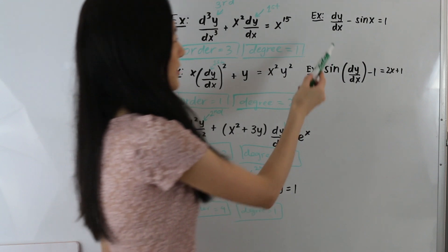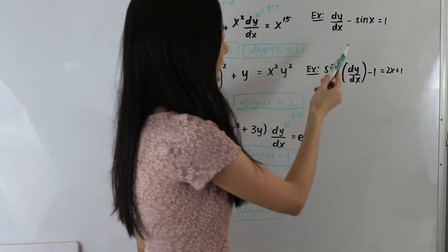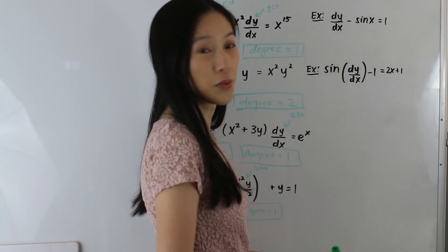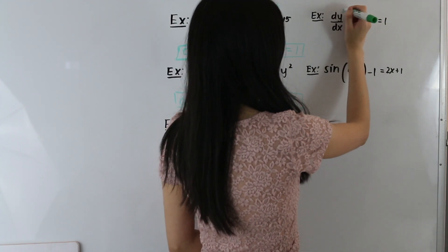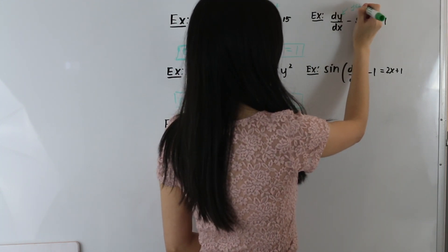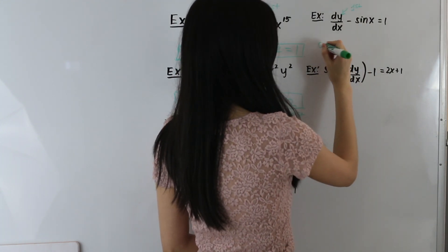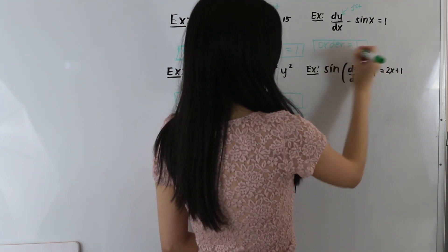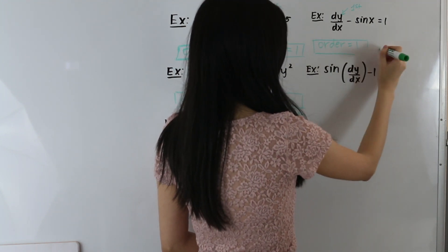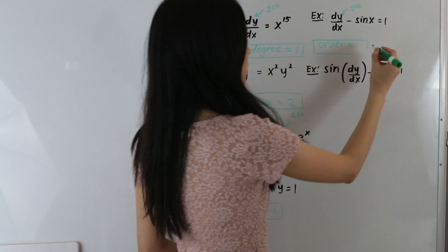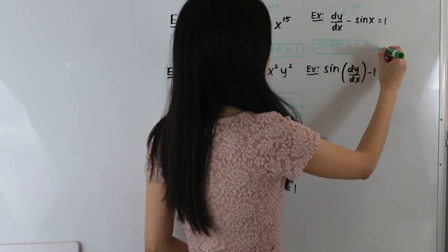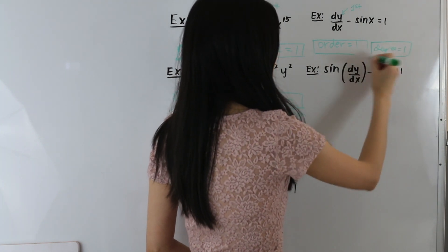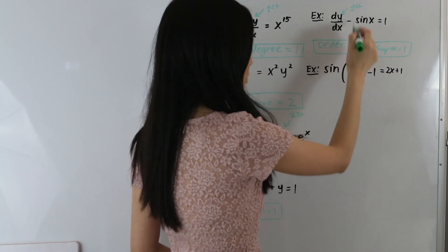Let's take a look at these examples. Here we have dy over dx minus sine of x, equal to 1. Labeling our derivative, this is first order, so our order is equal to 1. Our degree is also equal to 1 because our highest order derivative is raised to the first power.